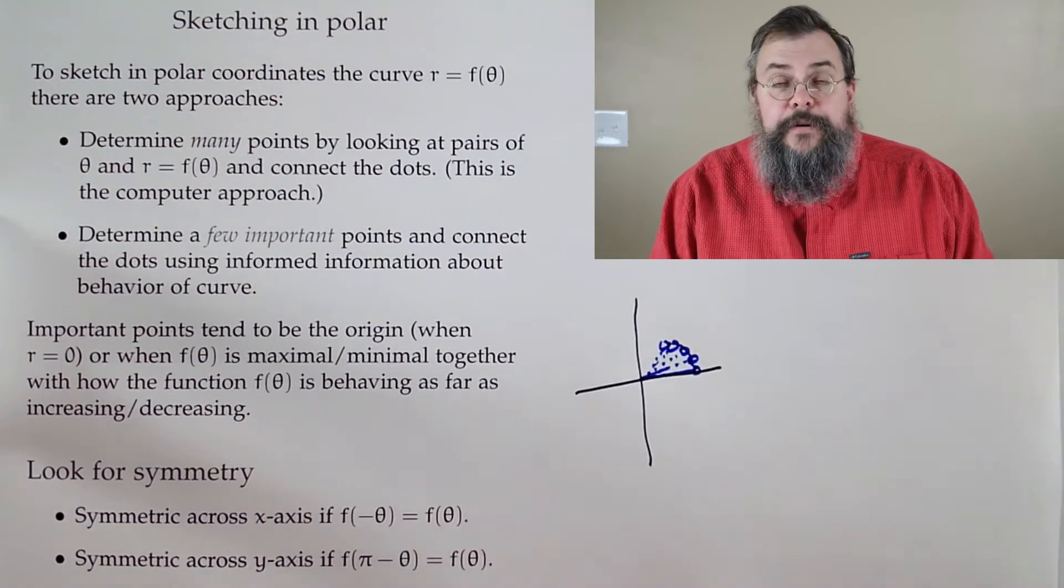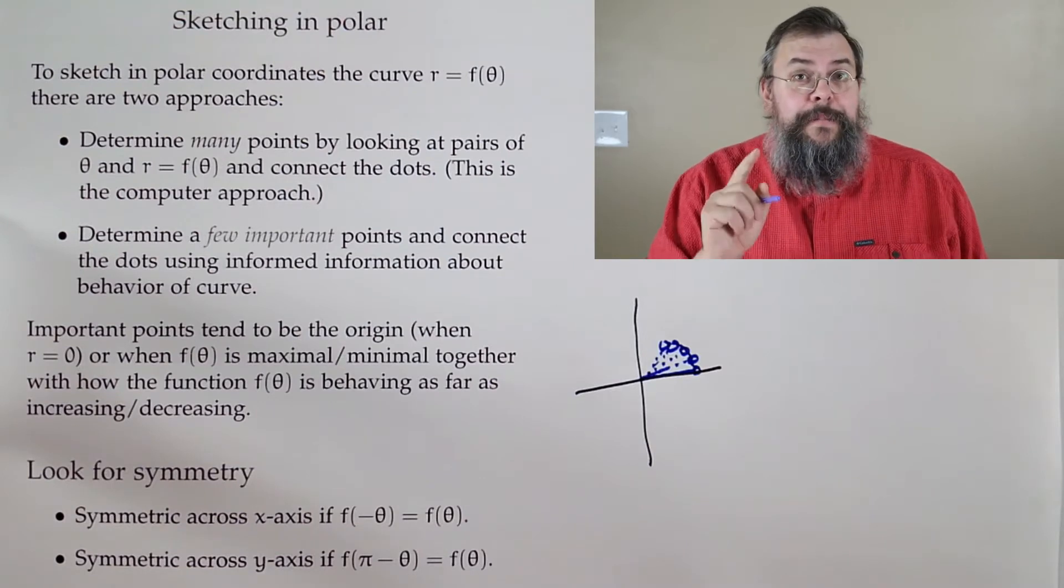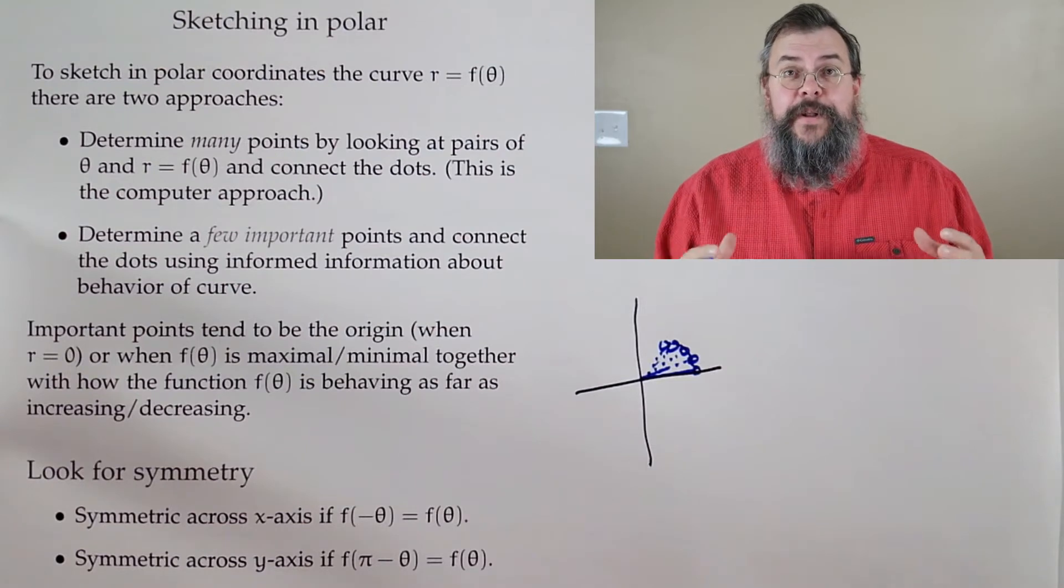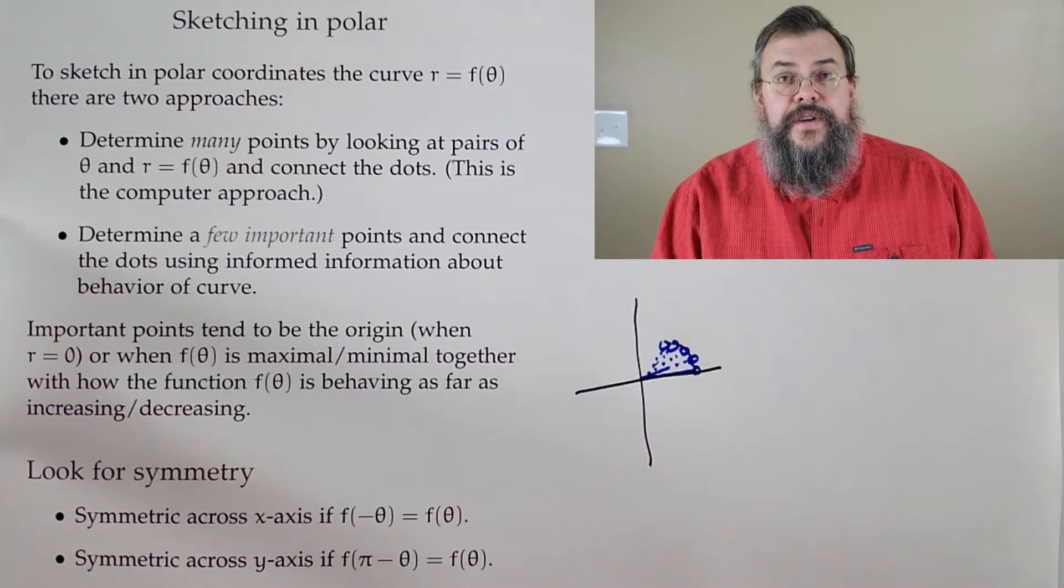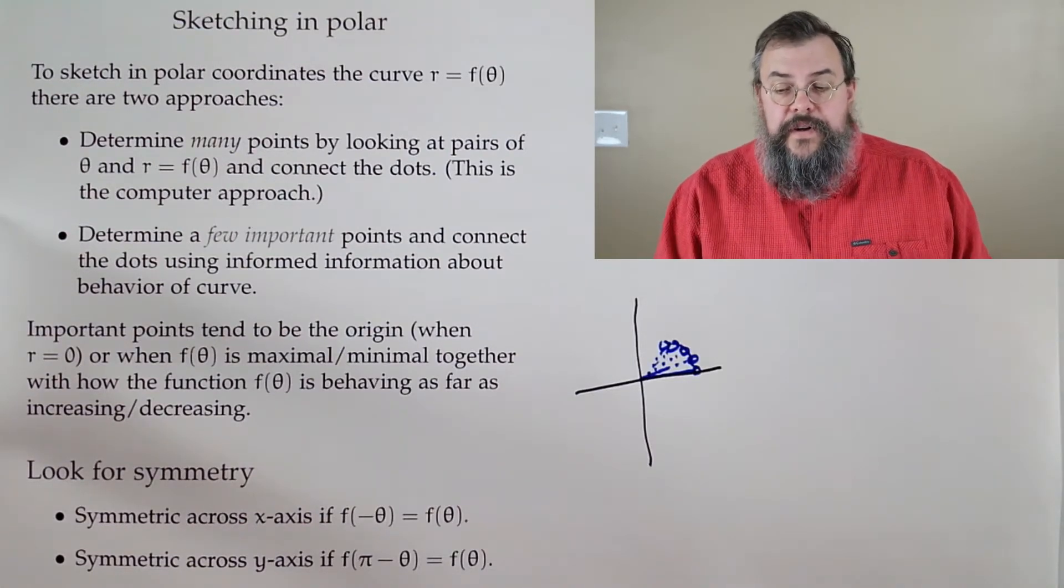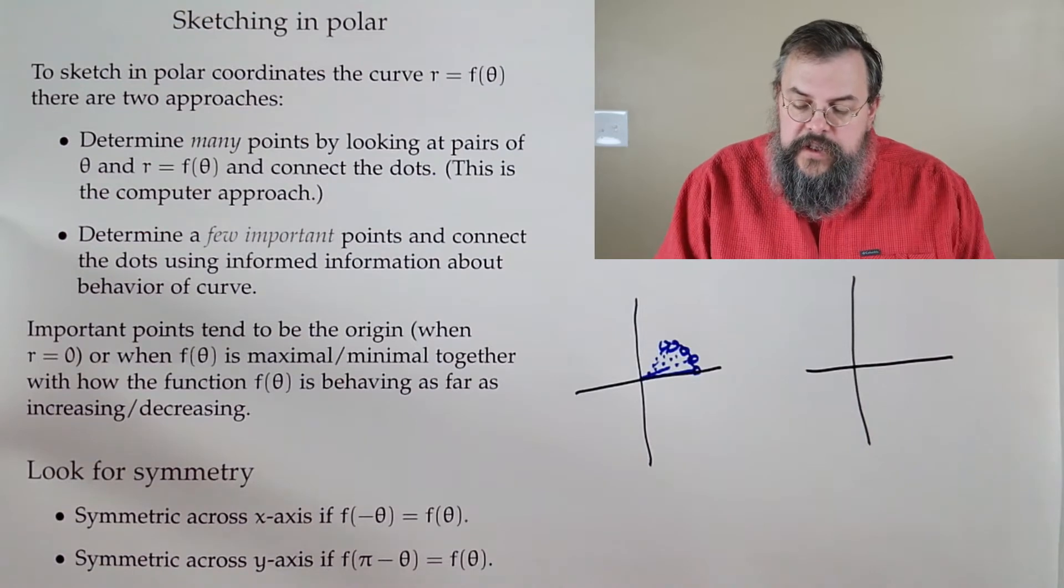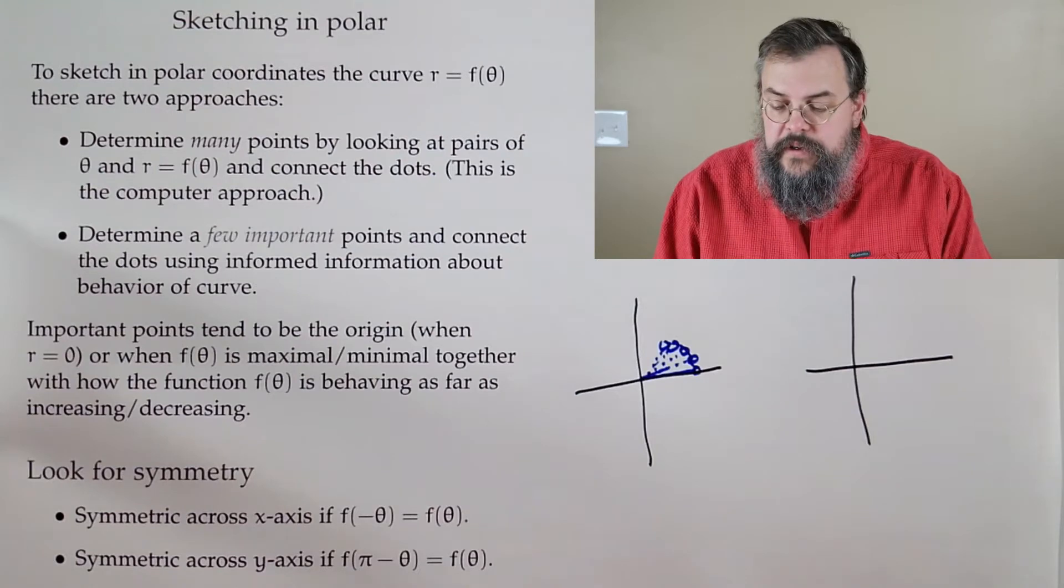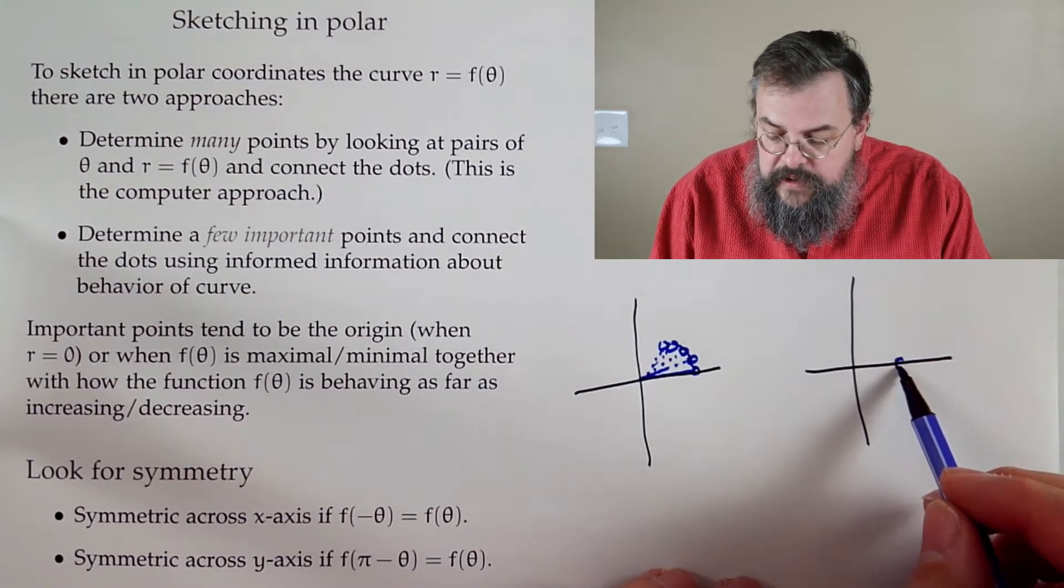What's a better way to do it? Or maybe not necessarily better, let's just say more human-friendly. More human-friendly way is to say, look, not all points have equal importance. What we can do is say let's try to understand the behavior of the curve so that we could say things such as, we can look at what the curve is doing using our calculus tools, for instance.